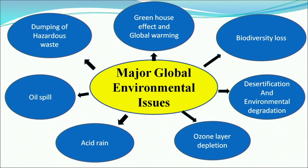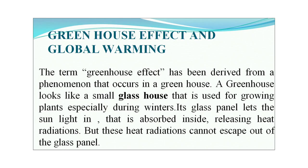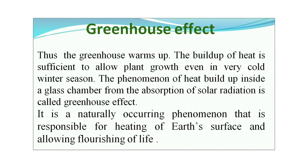First is the greenhouse effect and global warming. The term greenhouse effect has been derived from a phenomenon that occurs in a greenhouse — a small glass house used for growing plants, especially during winters. Its glass panels let sunlight in, which is absorbed inside and releases heat radiation, but these heat radiations cannot escape out through the glass. Thus the greenhouse warms up, and this buildup of heat is sufficient to allow plant growth even in cold winter seasons. This phenomenon is called the greenhouse effect, and it is a naturally occurring phenomenon responsible for heating the earth's surface.